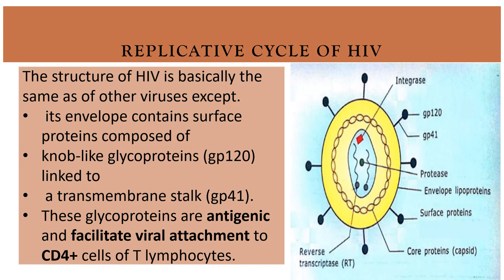The structure of HIV virus is basically similar to other viruses except the HIV virus envelope contains surface proteins like glycoprotein 120 and glycoprotein 41. Glycoprotein 120 is the knob attached to the envelope, and between the knob or glycoprotein 120 and the envelope there is a stalk — that is glycoprotein 41. It is antigenic and facilitates viral attachment to CD4 cells of T-lymphocytes.